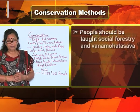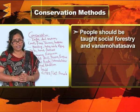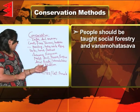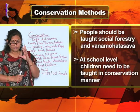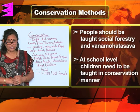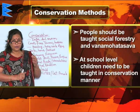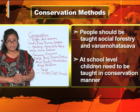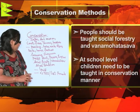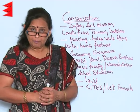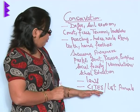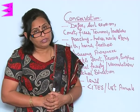Furthermore, people need to be taught social forestry, and Van Mahotsav is to be given a lot of importance. At the school level, children need to be taught about the conservation of natural vegetation and wildlife so that they grow up to be better citizens with awareness towards such factors. The government has made many efforts, including making laws for the country.